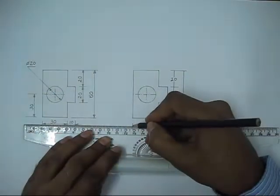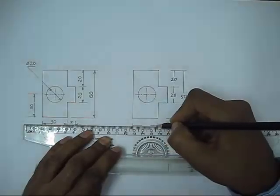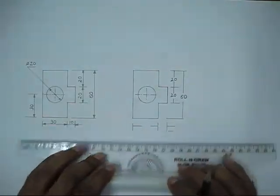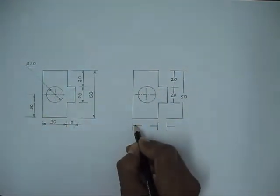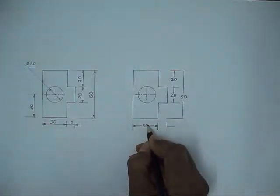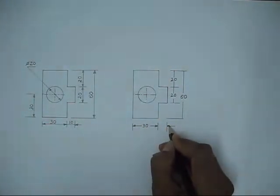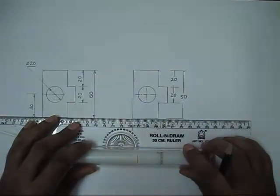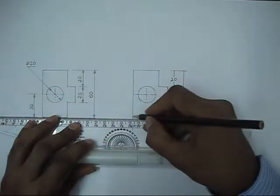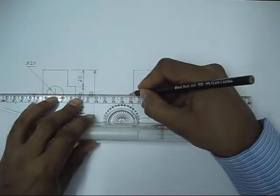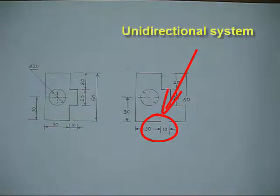These dimension lines I am drawing are horizontal. Here also I will give a break in between and write the dimension numbers such that we can read the number from the bottom of the drawing sheet. The orientation of the numbers is always the same. This is known as the unidirectional system.